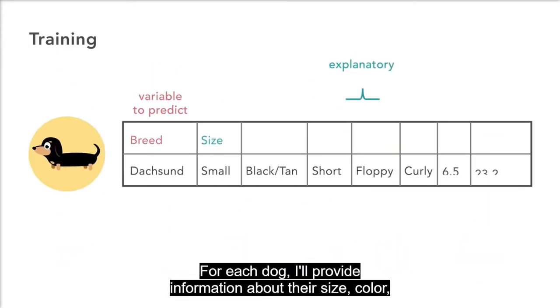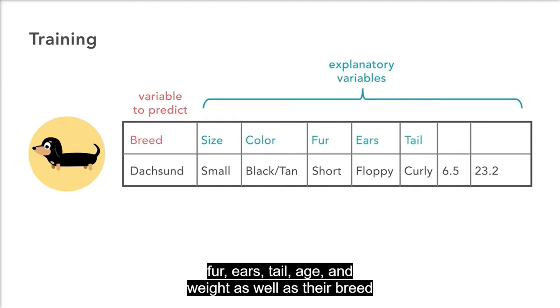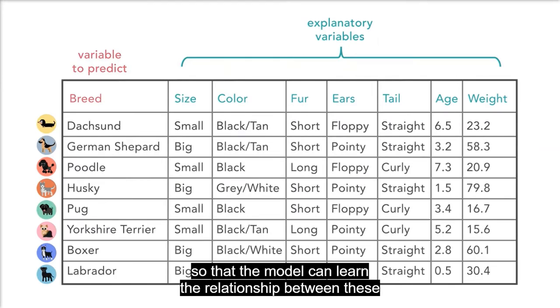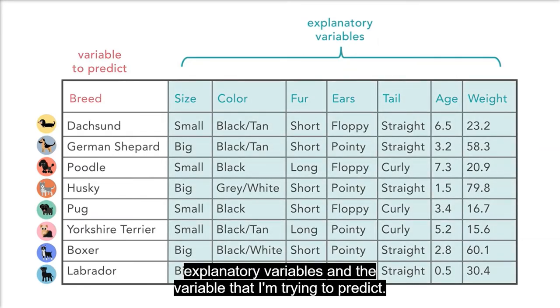For each dog, I'll provide information about their size, color, fur, ears, tail, age, and weight, as well as their breed, so that the model can learn the relationship between these explanatory variables and the variable that I'm trying to predict.